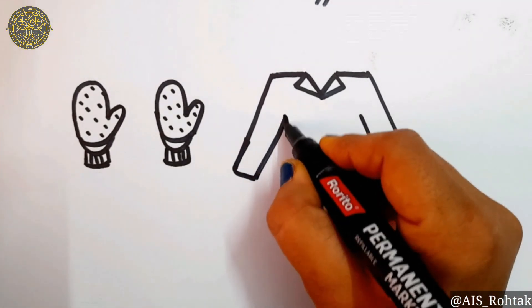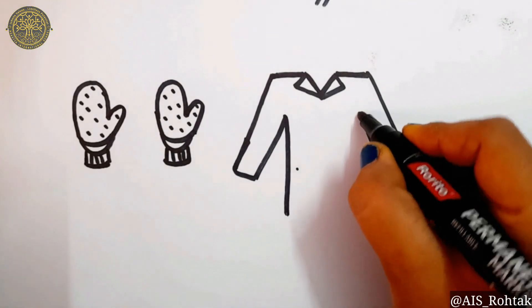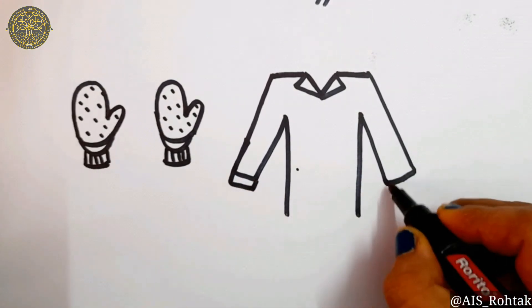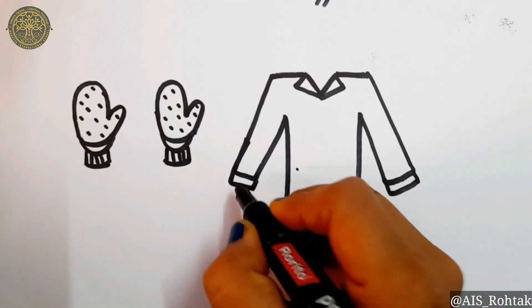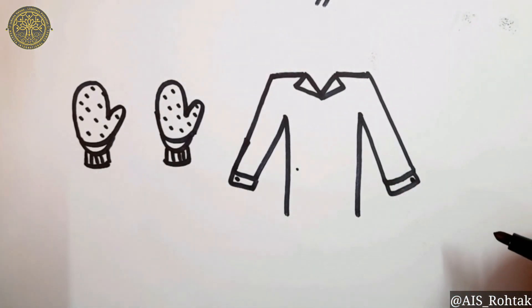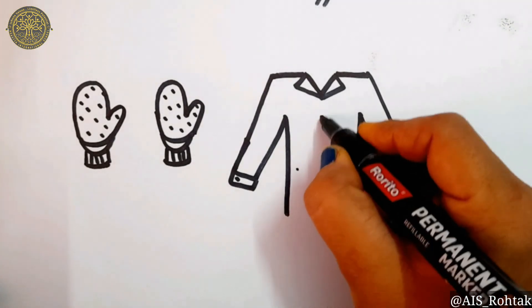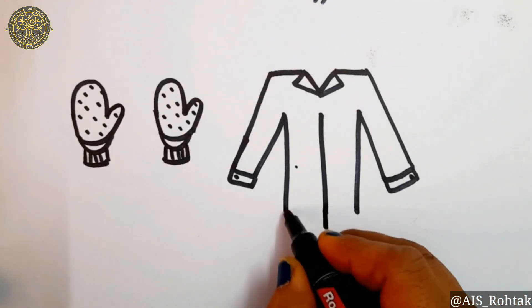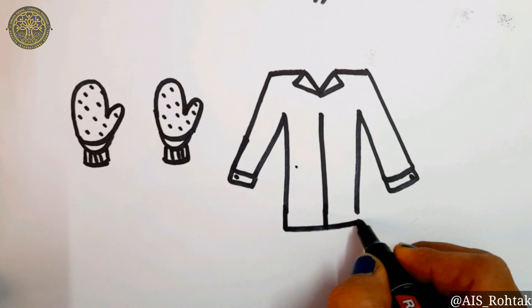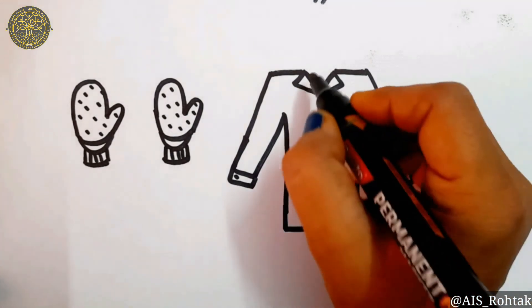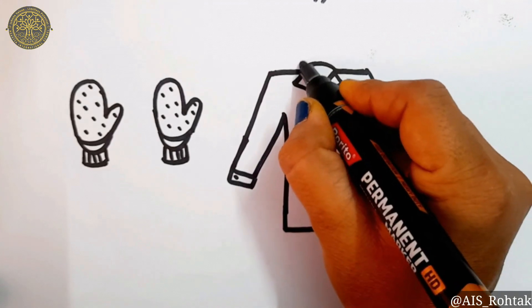After that, just draw two slant lines like this. Make the rectangular shape on each arm for the design. Now draw a standing line in the center and draw a slant line at the bottom side like this. Make the neck from the back side like a collar.